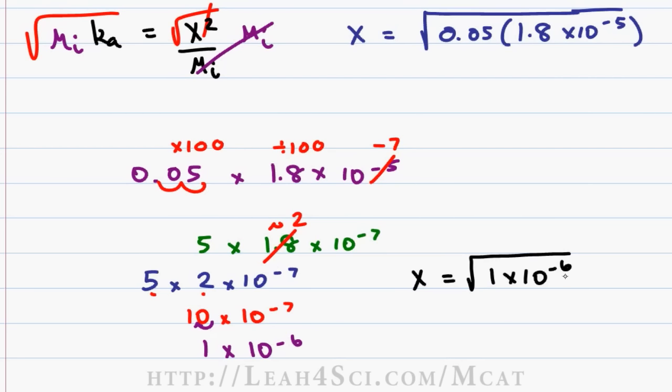The square root of the power means you simply divide it by 2 if it's an even number. The square root of 10 to the minus 6 is simply 6 divided by 2 is 3 which means 1 times 10 to the minus 3 and that is equal to our hydronium or H3O plus concentration.